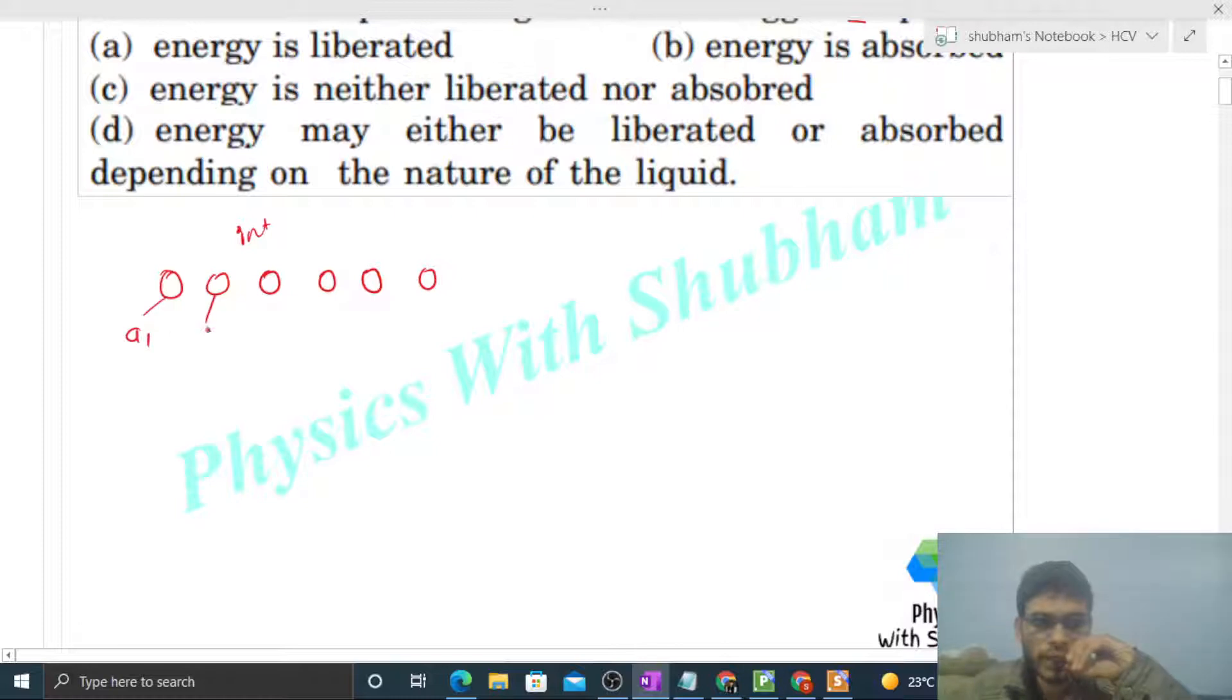The surface area is A1, A2, A3, and up to An. Then the initial total surface area of the liquid will be A1 plus A2 plus A3 up to An.